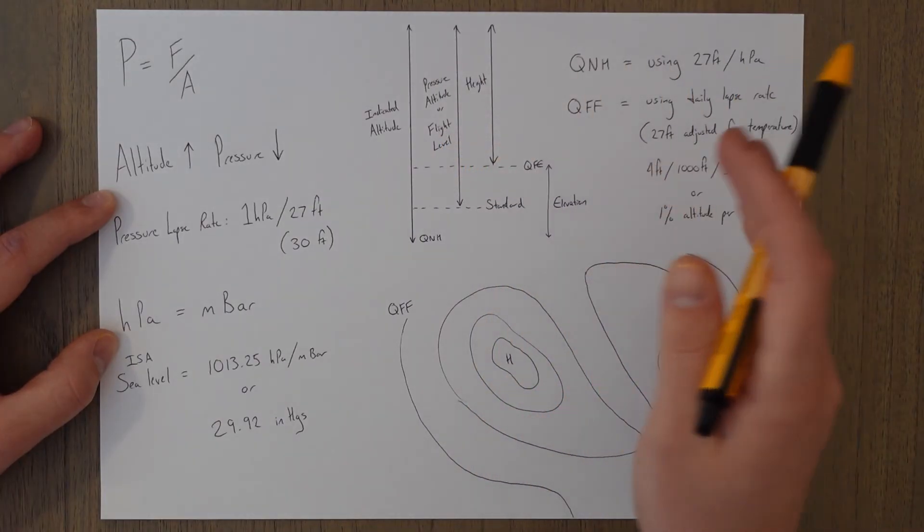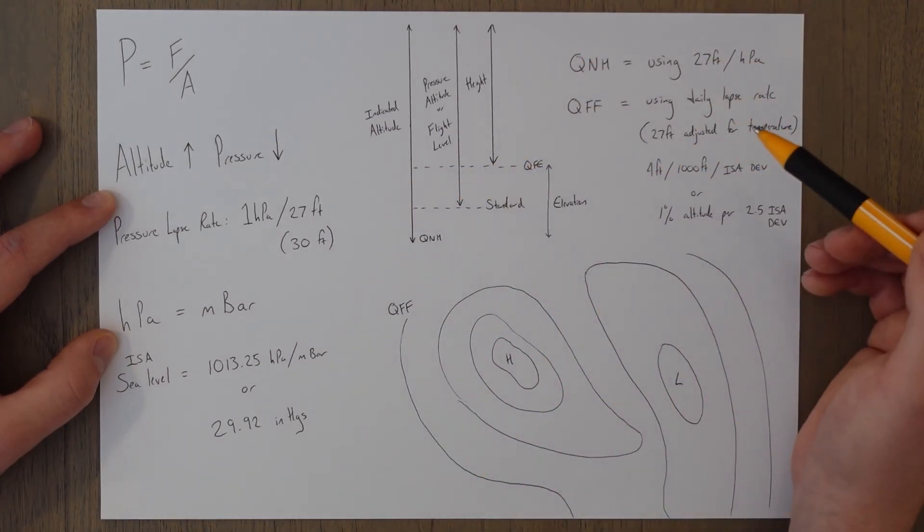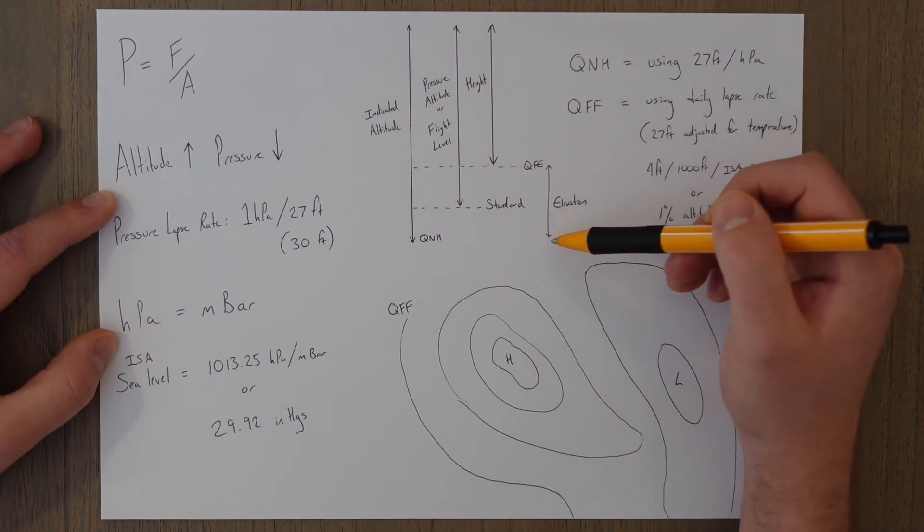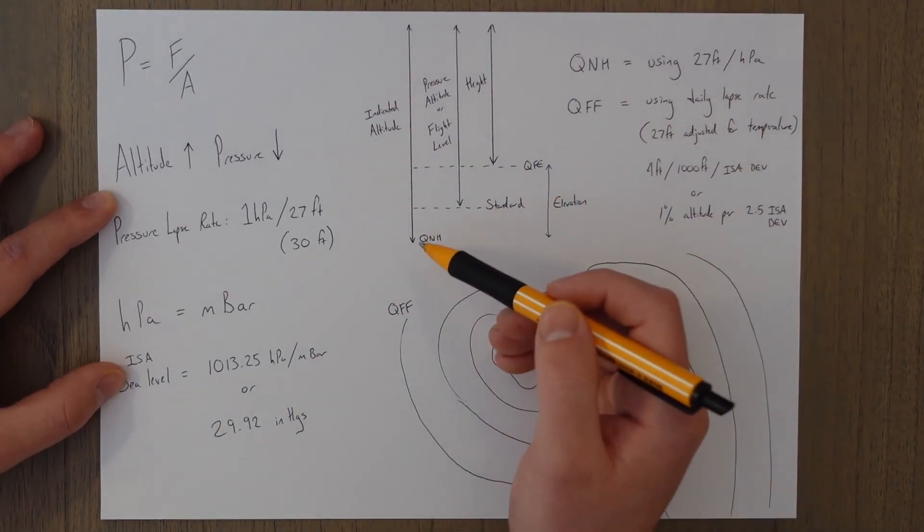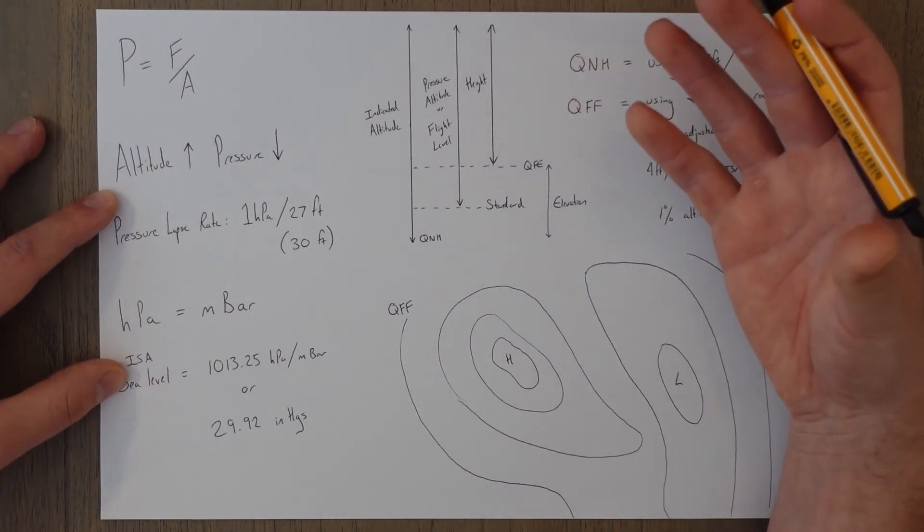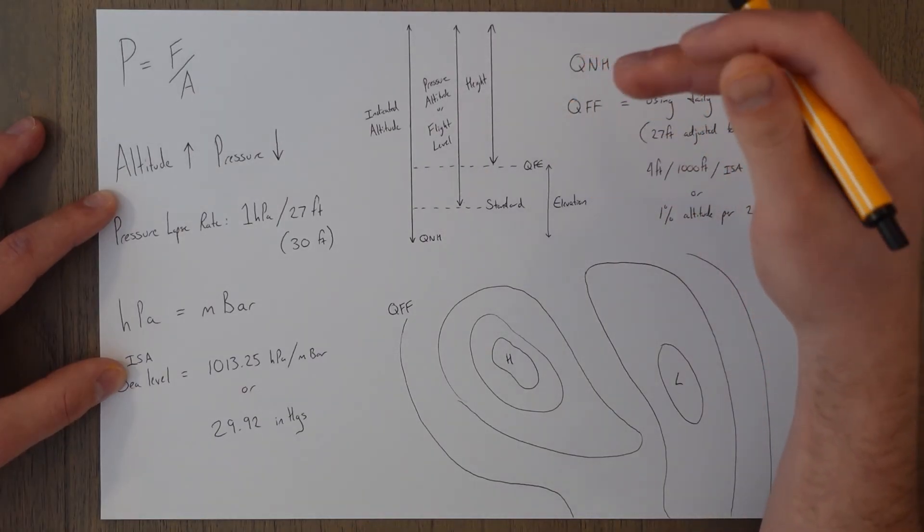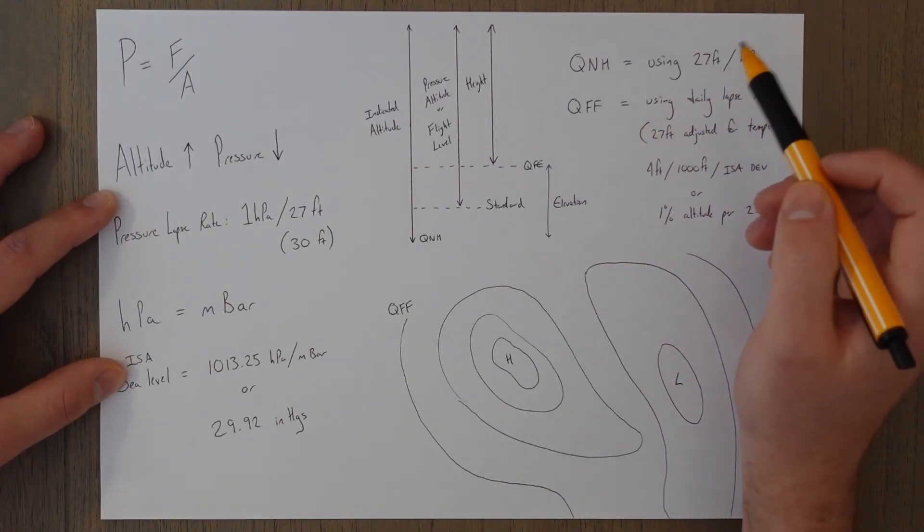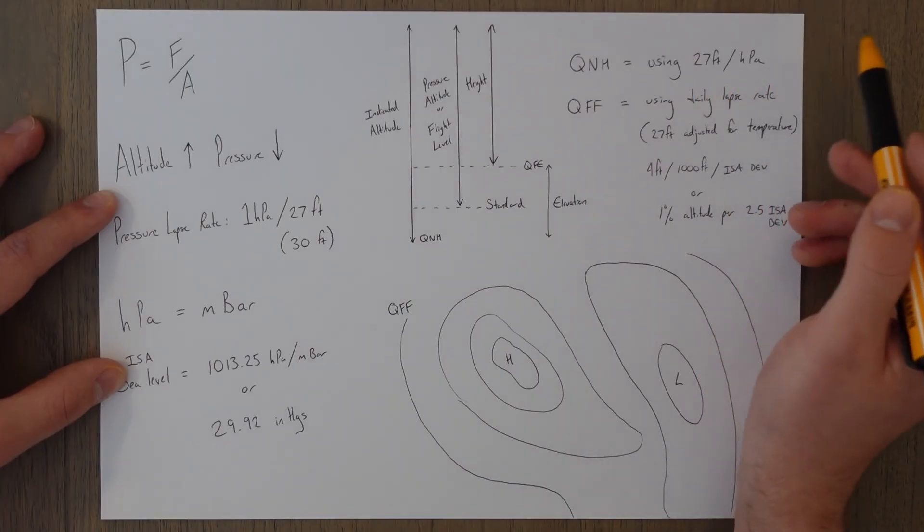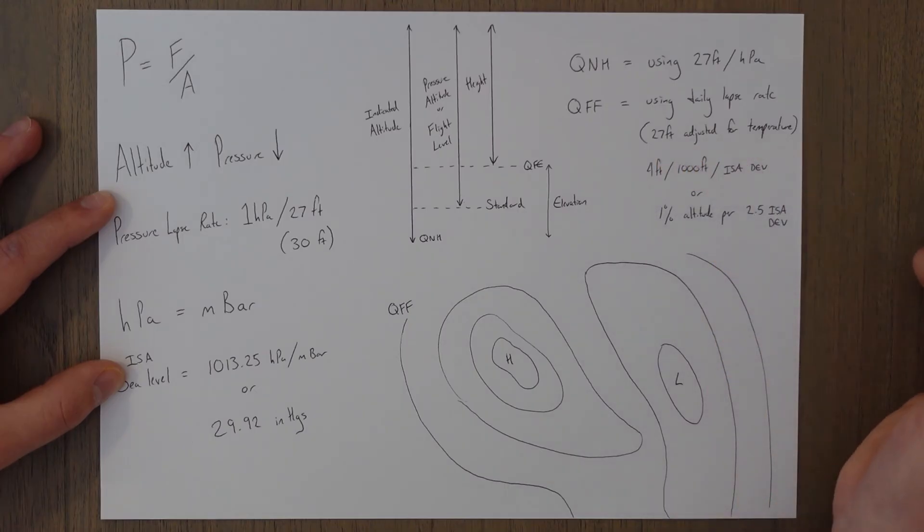And the height of the ground from the sea level to the highest point of the ground is known as elevation. So QNH is calculated by sensing the pressure at the airfield or weather station, then using 27 feet per every hectopascal with your known elevation to calculate an equivalent sea level pressure. The QFF does this but doesn't use a standard 27 feet per every hectopascal. It factors in temperature corrections, so it uses the daily lapse rate in a sense, so it's the 27 feet adjusted for temperature.